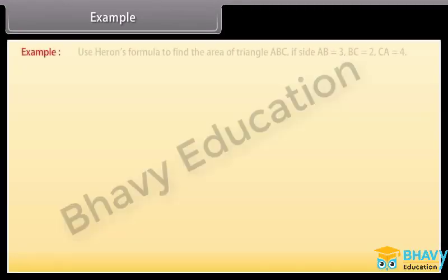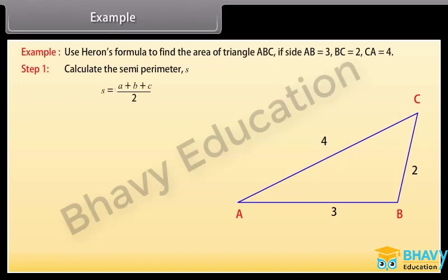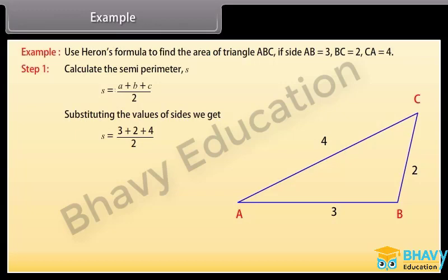Example: Let us look at some solved examples now. Use Heron's formula to find the area of triangle ABC if side AB is 3, BC is 2 and CA is 4. Solution: We will find the area step by step. Step 1: Calculate the semi-perimeter S = (A + B + C) / 2. By substituting the values we get S = (3 + 2 + 4) / 2, and by solving this we get S = 4.5.